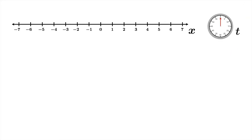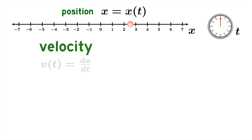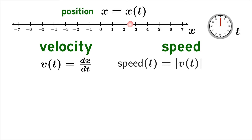What do we mean by speed? If we take the rate of change of position with respect to time, we get the velocity. Speed is the absolute value of that quantity.